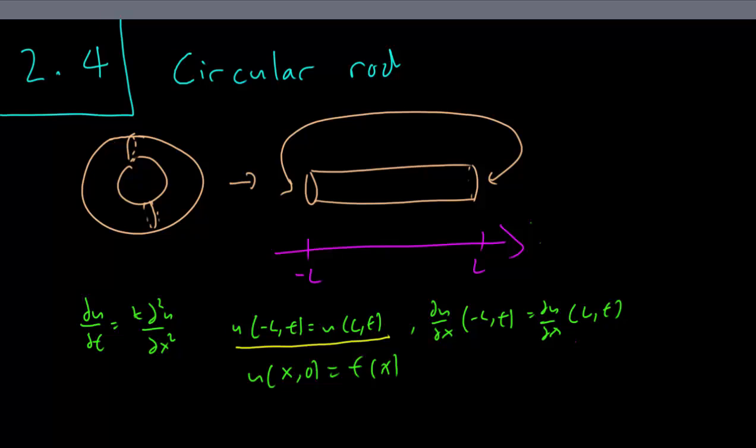And by the same reasoning, the flux of one end, the heat flow through one end is the same as the heat flow through the other end. Again, the two ends are really connected, even though we think of them as unrolled in this way.